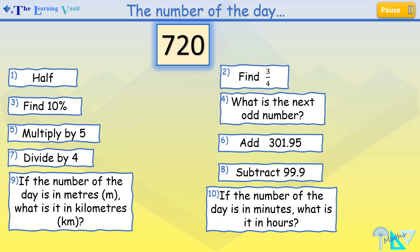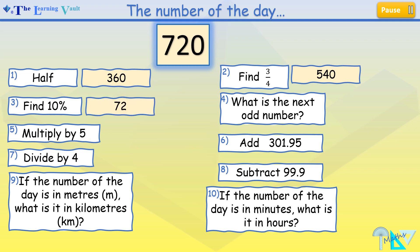And now for the answers. For 1 is 360. For 2 is 540. For 3 is 72. For 4 is 721. For 5 is 3,600.